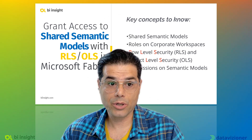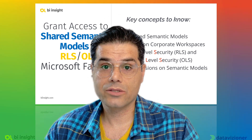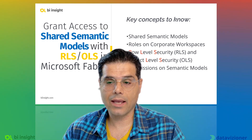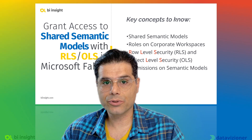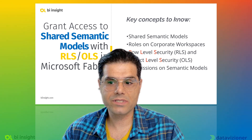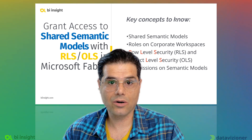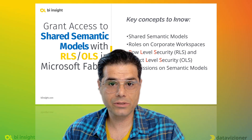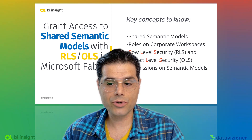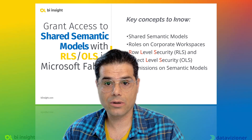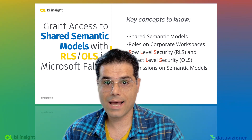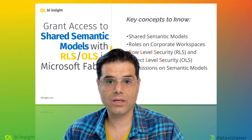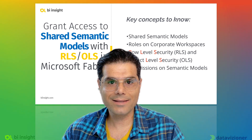The fourth point is about permissions on the semantic model. Report writers require read and build permission. RLS and OLS kick in when you have viewer role on a workspace, and also when you have read permission on a semantic model. But report writers need build permission as well. So to summarize: grant them read and build permission specifically on the semantic model. Let's begin.